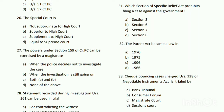Question number thirty-one: which section of the Specific Relief Act prohibits filing a case against the government? The answer is B - Section 6. Question number thirty-two: the Patent Act became law in which year? The answer is A - 1917.